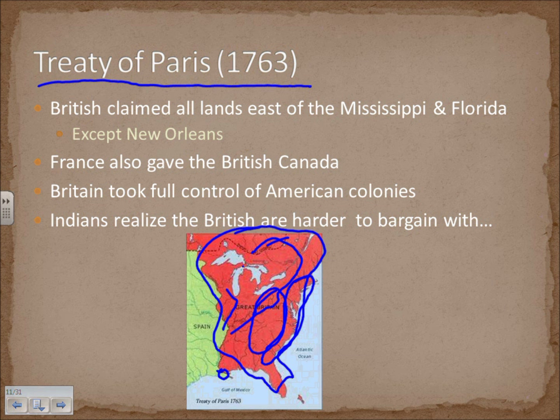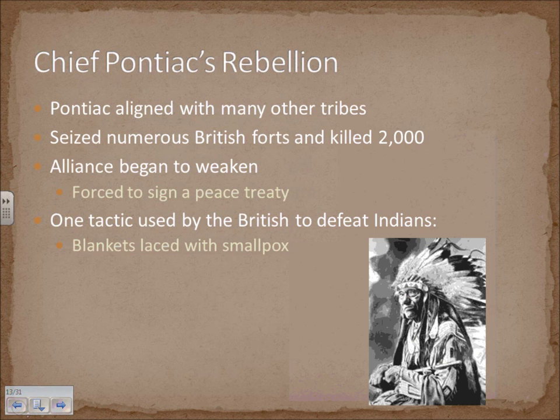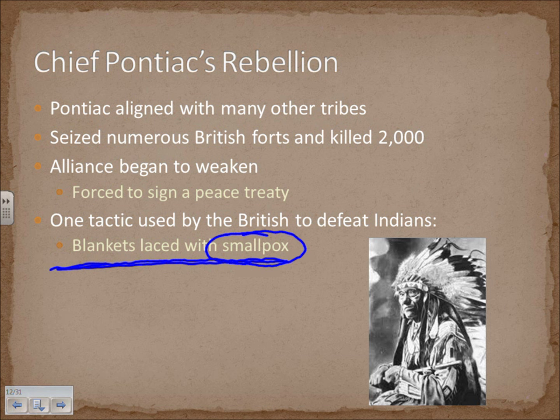Some Native relations deteriorated into open armed struggles. Chief Pontiac aligned with many other tribes, seized numerous British forts, and killed about 2,000 Englishmen — impressive for an Indian uprising. But his alliance began to weaken, eventually forcing him to sign a peace treaty. Notably, one British tactic was trading blankets that had been placed on smallpox patients to the Indians, who had no immunities to European diseases, causing it to spread through camps like a massive plague.